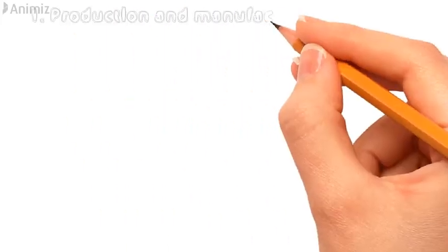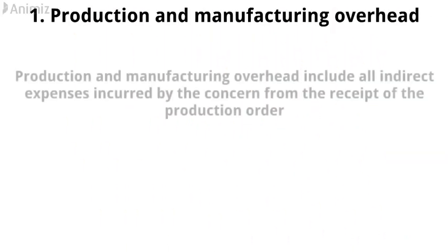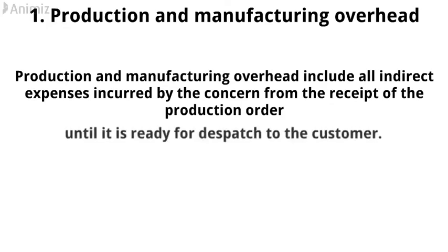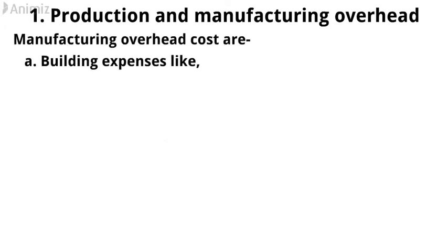1. Production and Manufacturing Overhead. Production and Manufacturing Overhead include all indirect expenses incurred by the concern from the receipt of the production order until it is ready for dispatch to the customer. Typical manufacturing overhead costs include: a. Building expenses like rent, insurance, repairs, etc.